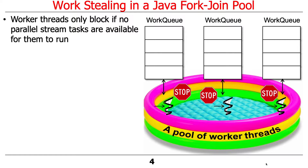This goes back to a previous question, although we'll see in a second it's a very deep and fascinating topic. Worker threads are going to try not to block. Remember the whole point was to not block — we never want them to stop if at all possible. They will only block if there is absolutely no work left to do at all.